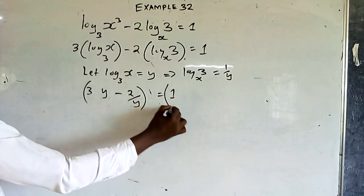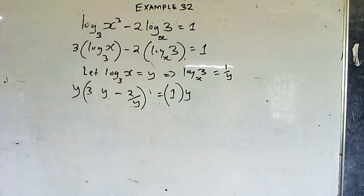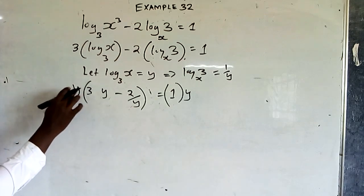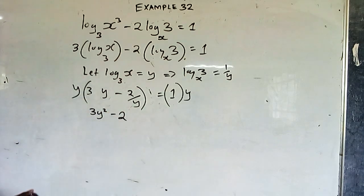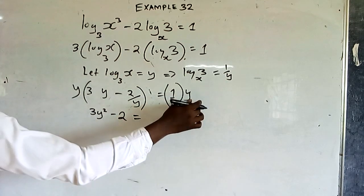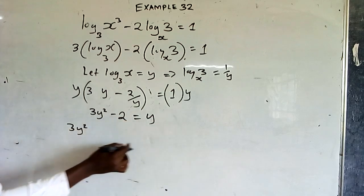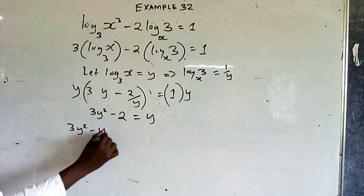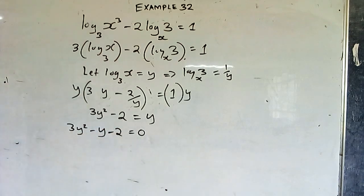Multiply both sides by y to eliminate the denominator. We get 3y² minus 2 equals y. Rearranging into standard quadratic form: 3y² minus y minus 2 equals 0.